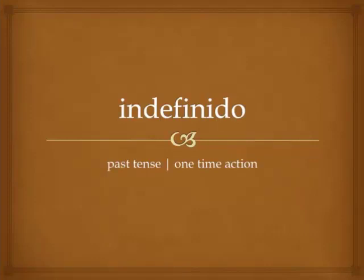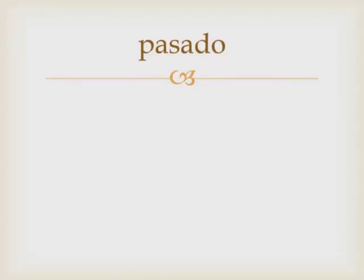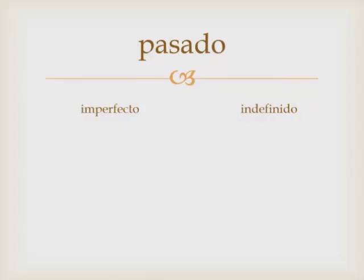El indefinido is the second past tense in Spanish, which is a one-time action in the past. There are two past tenses: the pretérito imperfecto and the pretérito indefinido. We're just going to use imperfecto and indefinido, since we know we're talking about past tenses. The imperfecto is an ongoing action in the past, while the indefinido is a one-time action in the past.